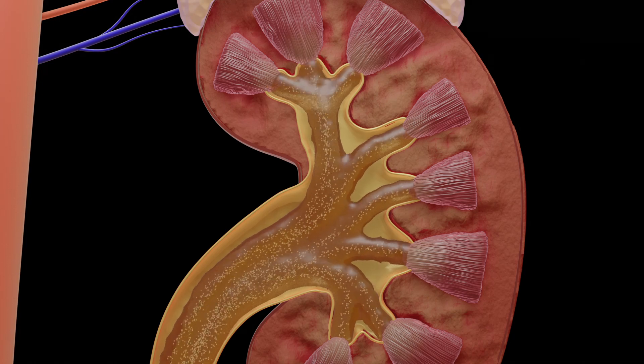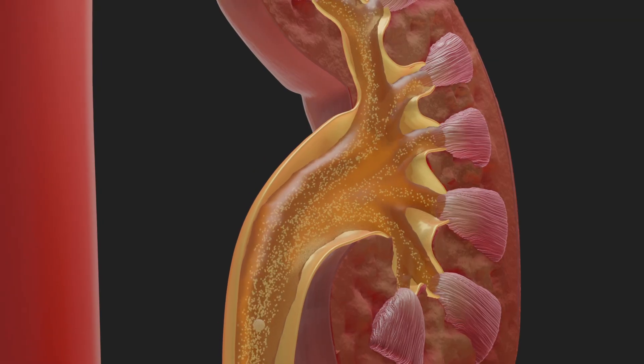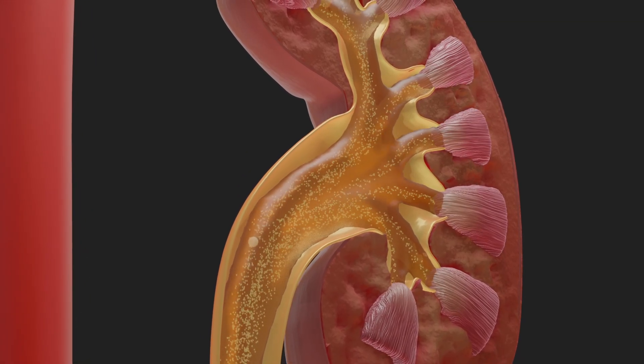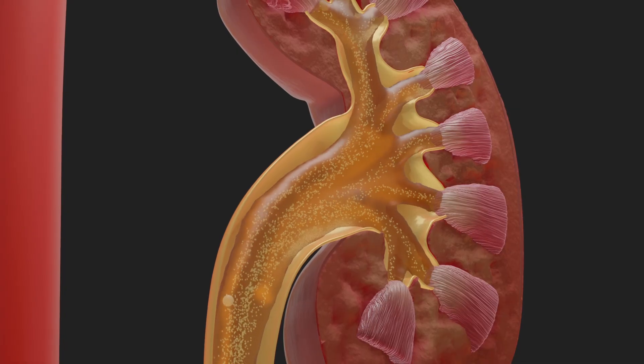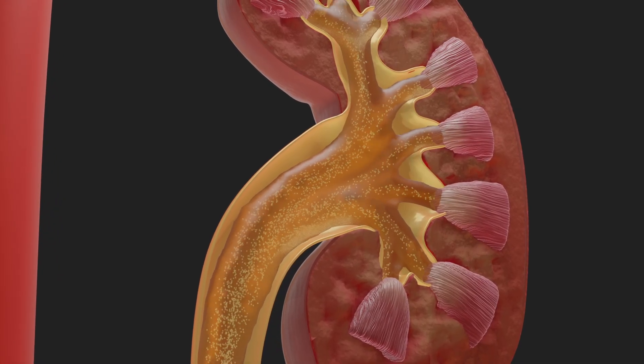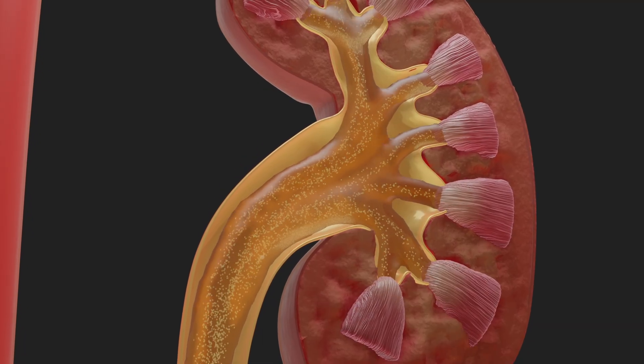Urinary stones can obstruct the flow of urine and ultimately even damage the kidneys. If the concentration of certain substances in the urine is too high, there is a risk that crystals will form and clump together to form larger conglomerates. This is promoted by factors such as poor diet, lack of exercise, and insufficient fluid intake.